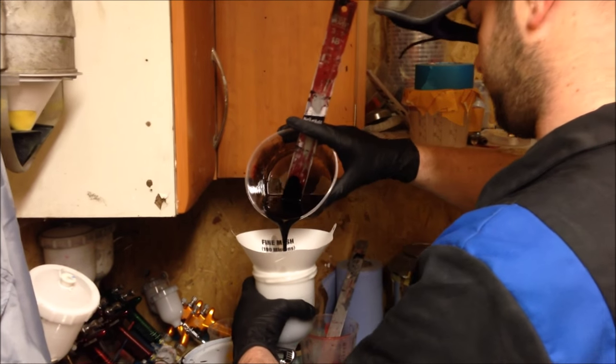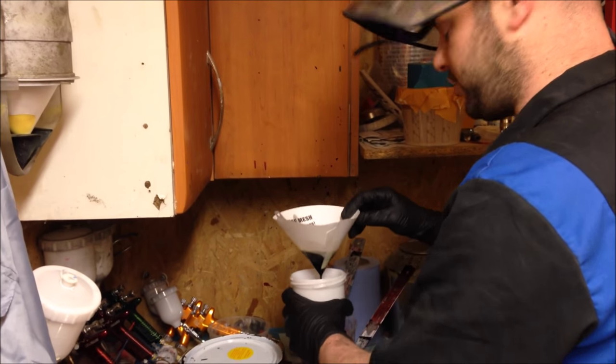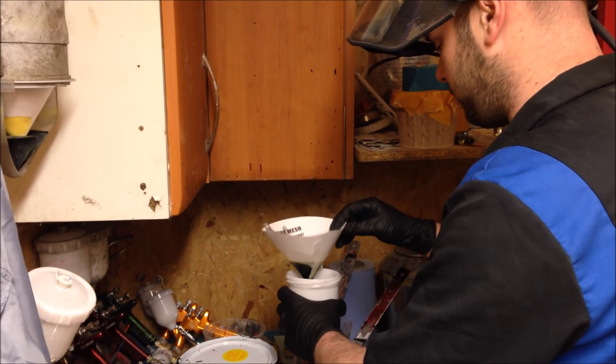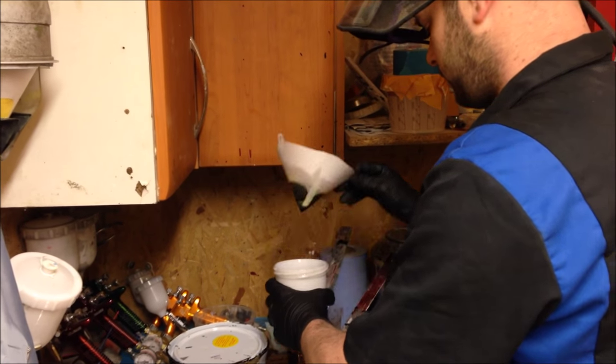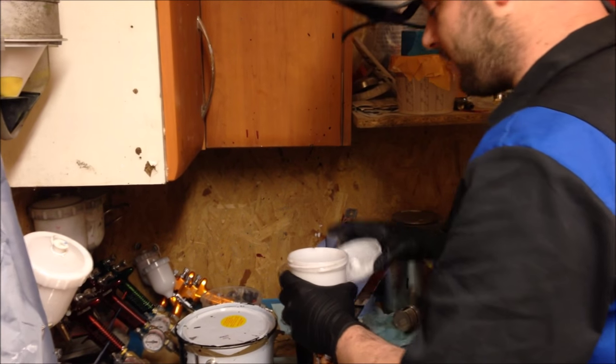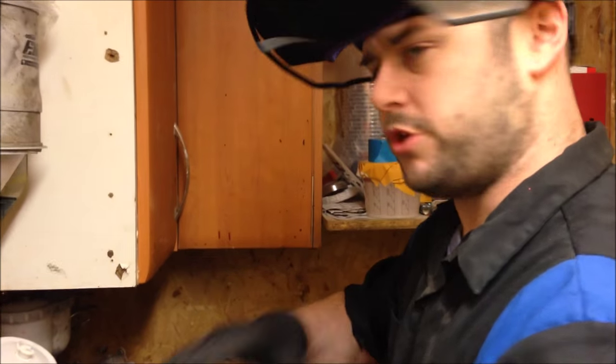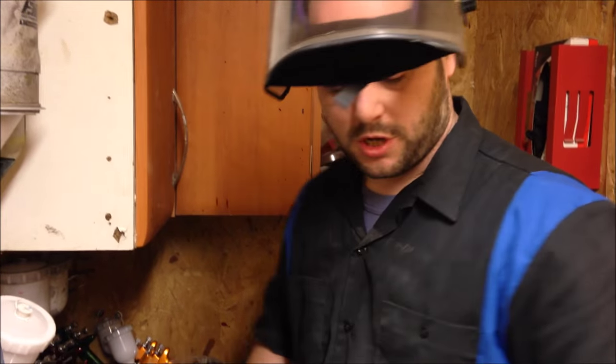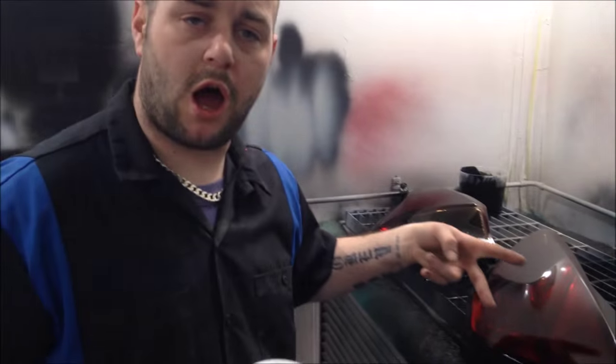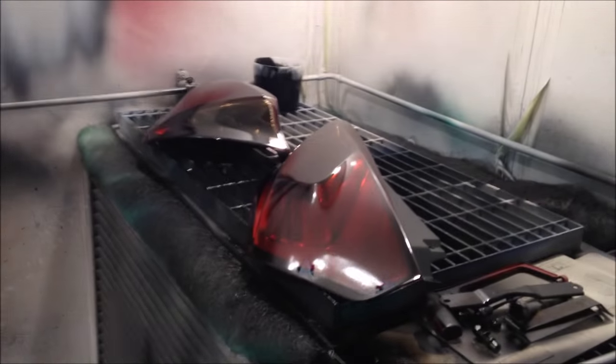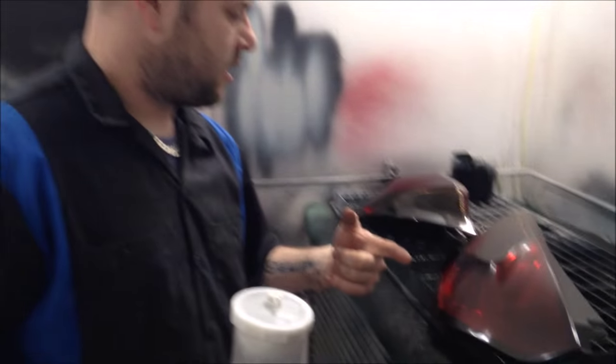We're not going to need a lot, that'll do. You can add a little bit more reducer into your clear as well to help it flow, but this will be fine. You want to build up your layers with the tint because if it's a little bit too dark you can just color sand it. Right, let's go in there. This is two coats of the tint, we're doing one more coat and that's it.